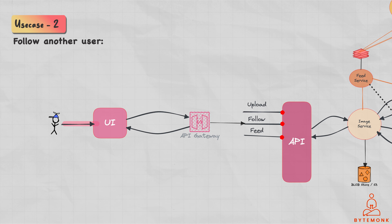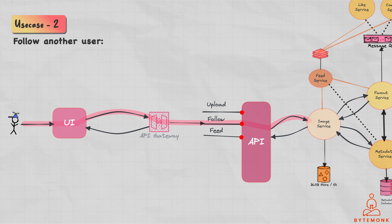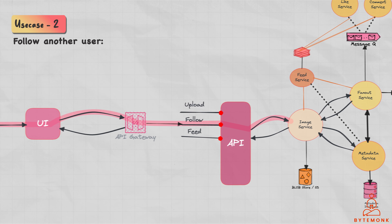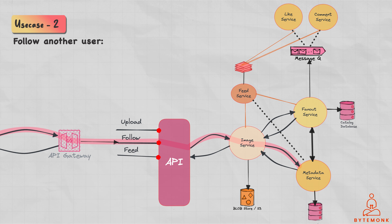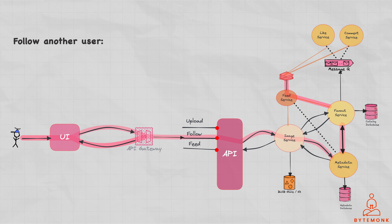Here is the sequence of events for the follow another user use case. The user sends a request to follow another user to the image service. For the sake of modularity, you can also have a separate follow service, but here we'll use the image service — you may think of this as a monolith service. The image service authenticates the user and retrieves the list of followers for the user being followed from the metadata service. The image service adds the user to the list of followers and updates the metadata service. The fanout service retrieves the list of followers, adds the new follower to the follower feeds, and updates the cache for both users. The feed service retrieves the follower feeds from the cache and updates the news feed caches for all followers. Finally, the user receives a success response from the image service.